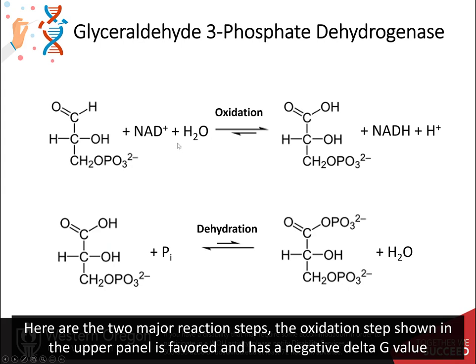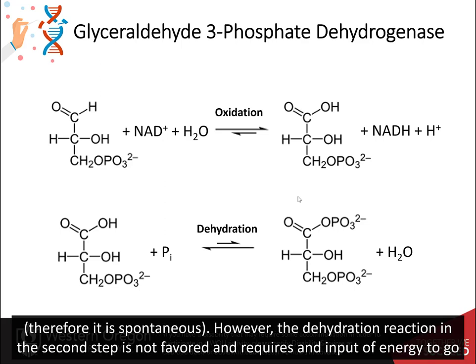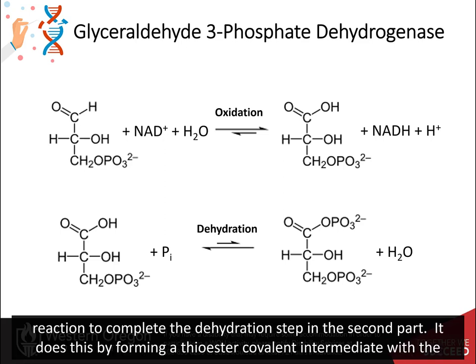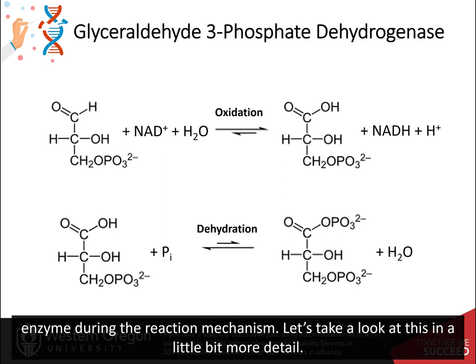The oxidation step, shown in the upper panel, is favored and has a negative delta G value. Therefore, it is spontaneous. However, the dehydration reaction in the second step is not favored and requires an input of energy to go in the forward direction. The enzyme is able to couple these reactions together and use the excess energy from the oxidation reaction to complete the dehydration step in the second part. It does this by forming a thioester covalent intermediate with the enzyme during the reaction mechanism.